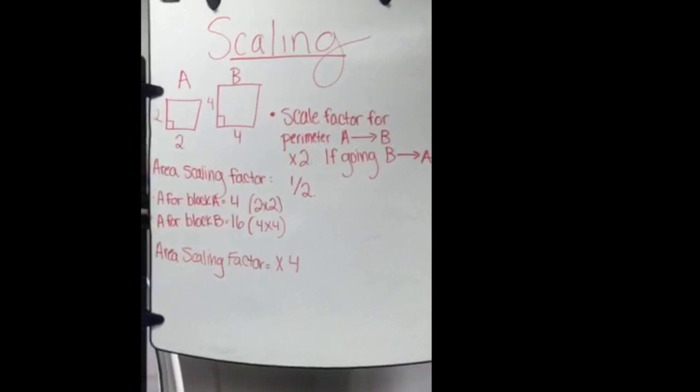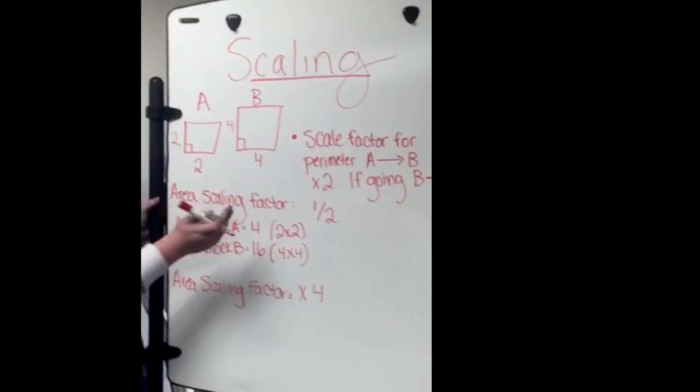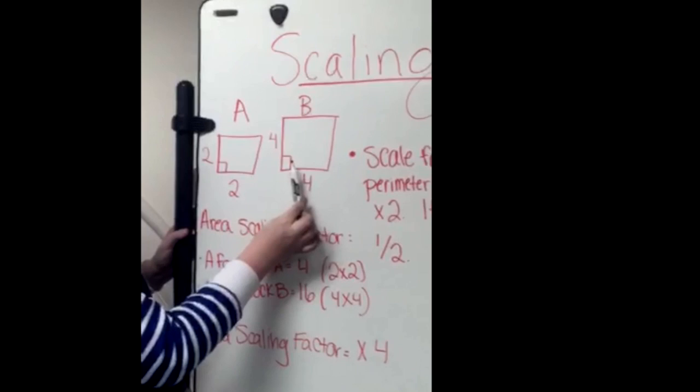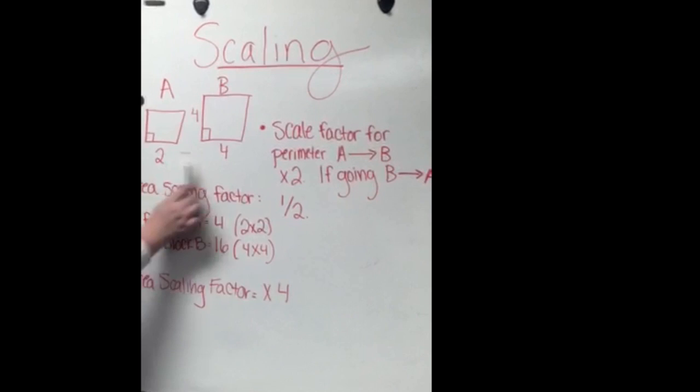Now we're going to talk about scaling. For the perimeter scaling factor, we're going from A to B. So since A has 2 and B is 4, then if you're going from A to B, your scaling factor will be times 2. If you're going from B to A, then it's 1 half because 2 is 1 half of 4.